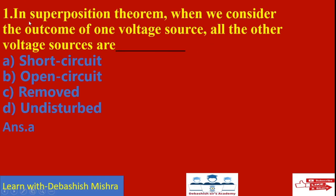In the first question on superposition theorem: when we consider the effect of one voltage source, all other voltage sources are short circuited. When we consider a voltage source, another voltage source will be short circuit — that we have already discussed in my previous video. So the answer will be (a): short circuit.